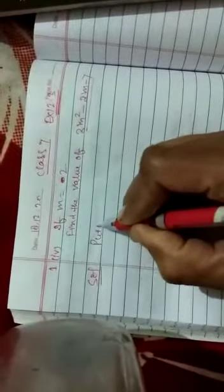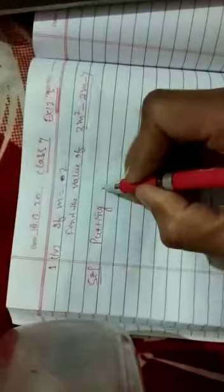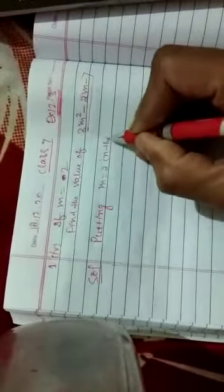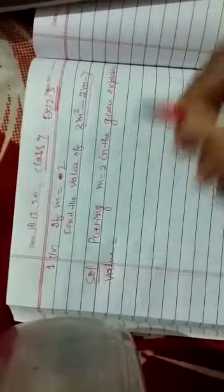So you will be writing this is solution: putting m is equals to two in the given expression. So it will be, value of the expression, you can write simply value is equals to.